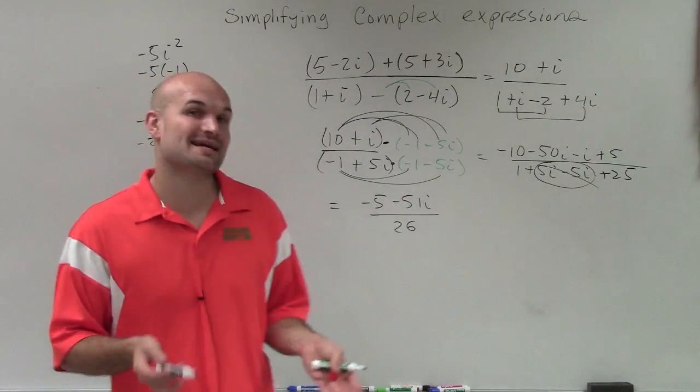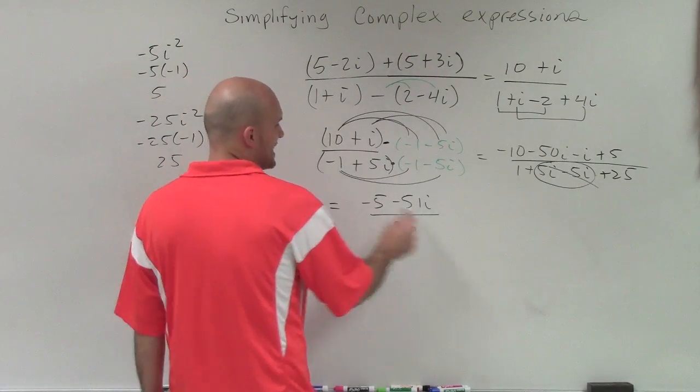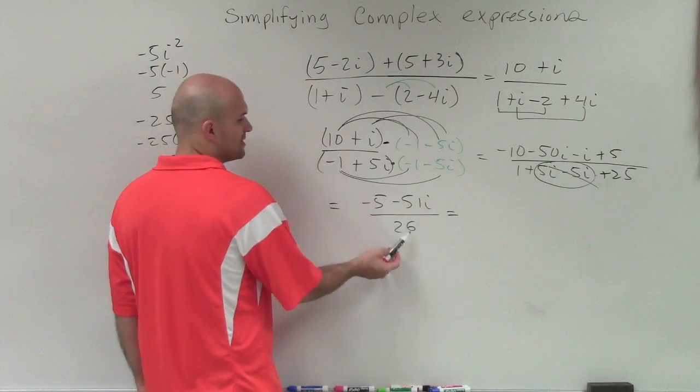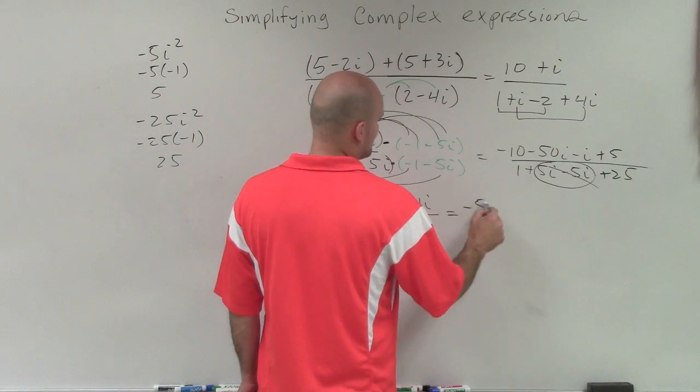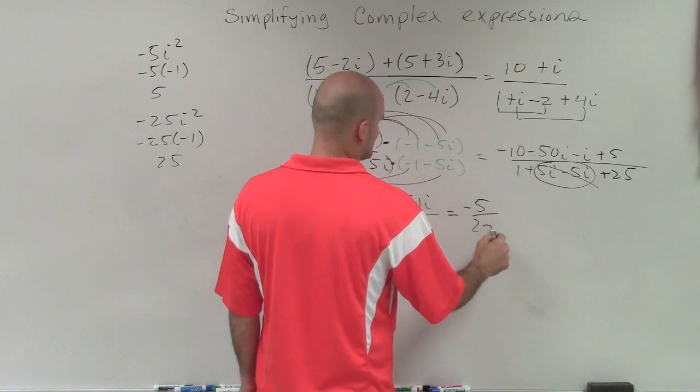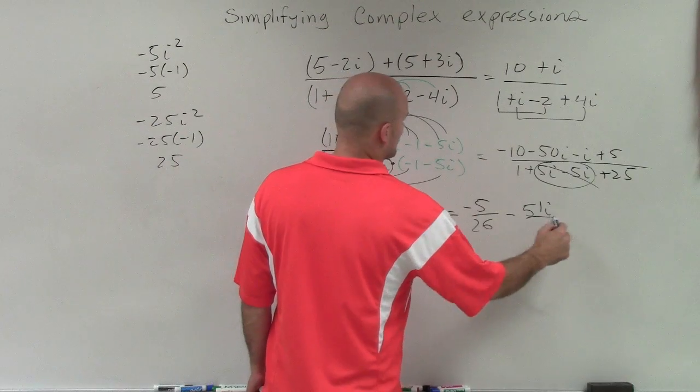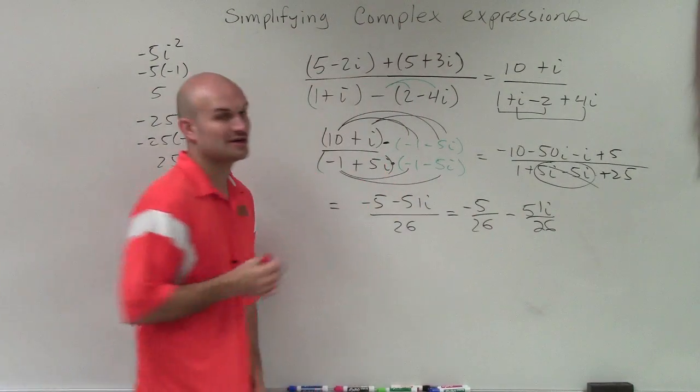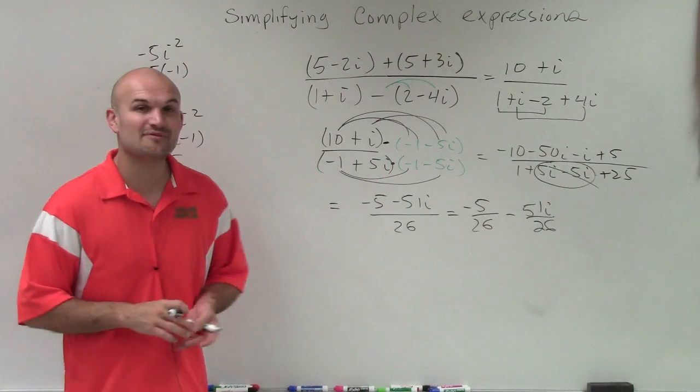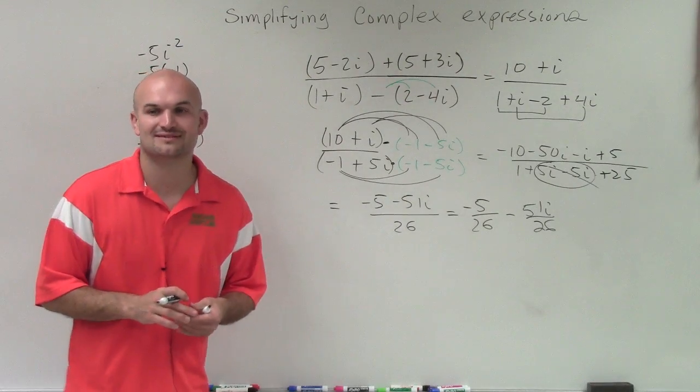Now I need to rewrite my answer in complex form, which is a plus bi. So I'm going to divide the 26 into both of my terms. So I have -5 over 26 minus 51i over 26. So there you go, ladies and gentlemen. That is how you simplify your complex expression. Thanks.